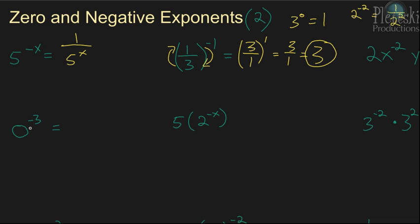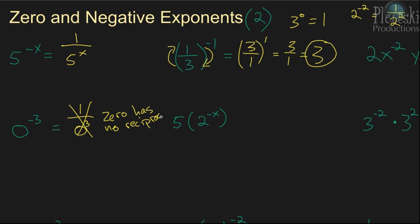The next example: 0 to the negative 3 power. When you write this as a reciprocal, it becomes 1 over 0 to the third power, and that's going to be undefined, because 0 doesn't have a reciprocal. So, 0 has no reciprocal — it's undefined.